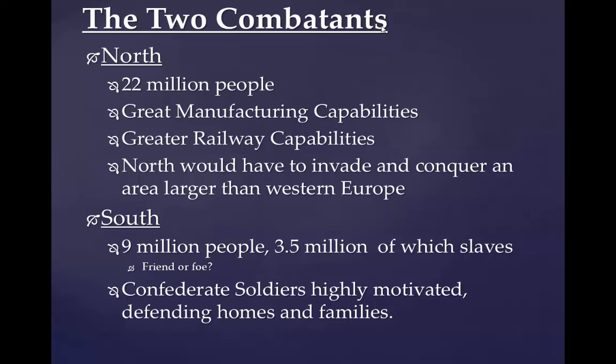About 3.5 million of the people in the South were actually slaves. The question comes up whether these slaves could be considered friendly or foes. Obviously, arming slaves could be majorly problematic for the Confederates, and it worried them. So really, they were left with significantly fewer people than even their total population suggested.